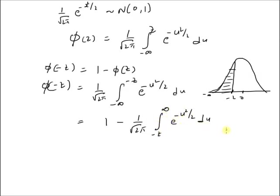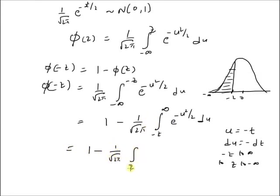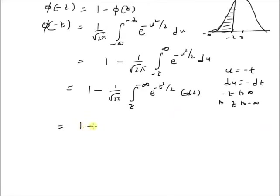Now by using a change of variables — letting u equal minus t, then du becomes minus dt — and the limits change from minus z to infinity, to z to minus infinity. This expression becomes 1 minus 1 over square root of 2π times the integral from z to minus infinity of e to the power of minus t squared by 2 times minus dt. By flipping the integral limits and canceling the minus signs, we have 1 minus 1 over square root of 2π times the integral from minus infinity to z of e to the power of minus t squared by 2 dt, which by definition equals Phi(z). So this equals 1 minus Phi(z).